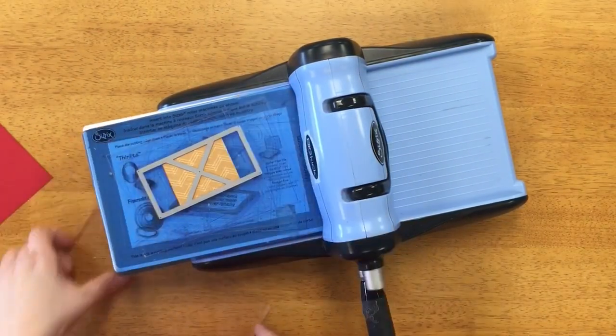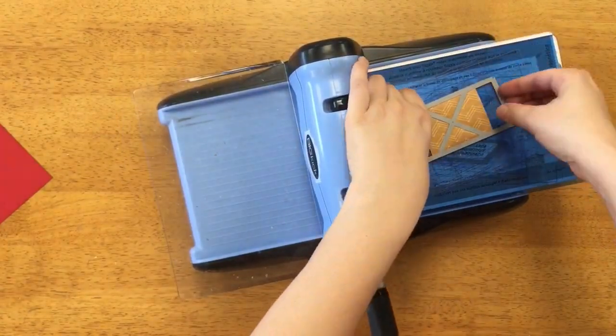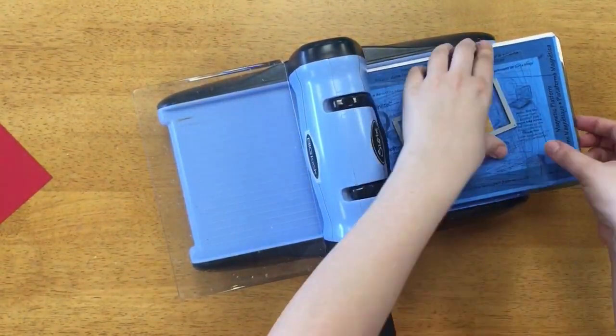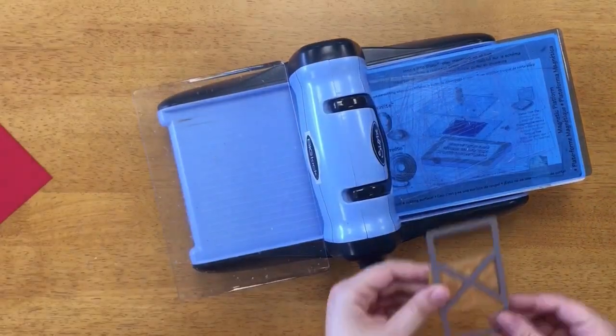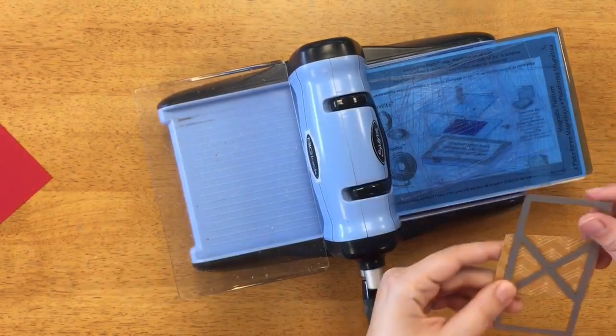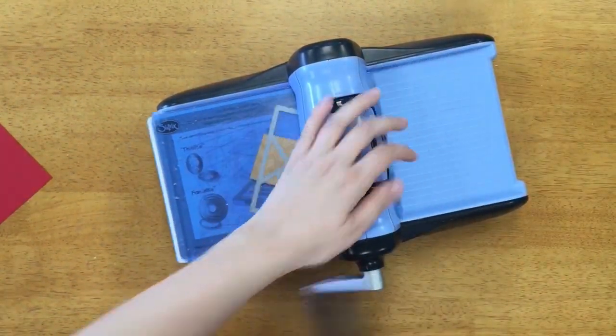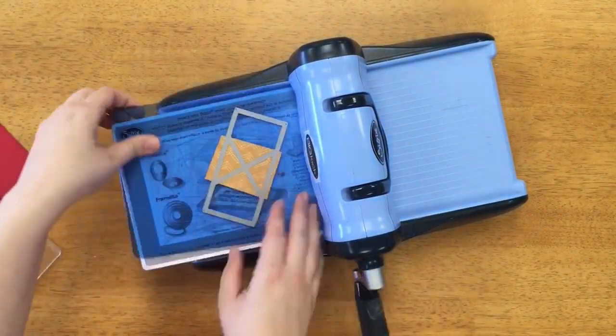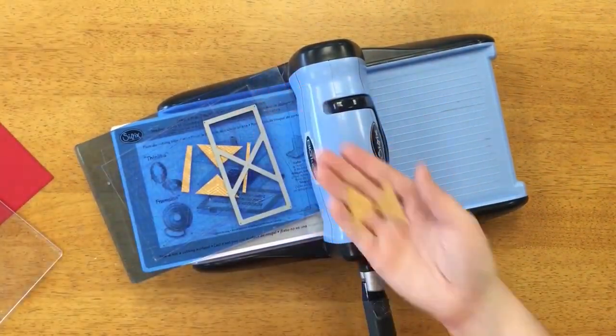I'm using the same die again except this time I just want to get the two triangles in the center so I just cut enough paper to get those two pieces and it's really easy to just pop them out with your finger. And now I'm showing I'm using a pattern paper and so I want them to look straight on my page so if you need you can turn your die a different way so your paper will cut in a certain direction.